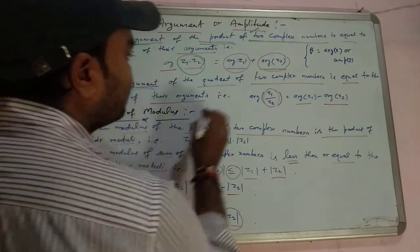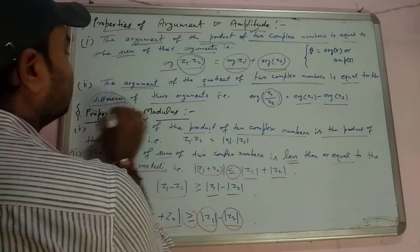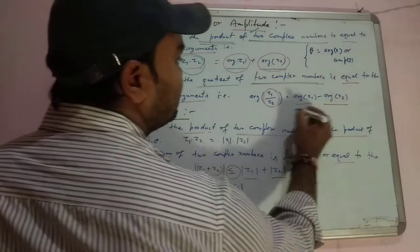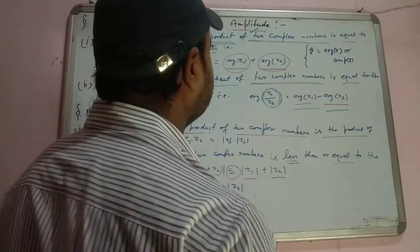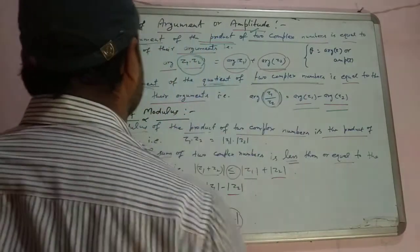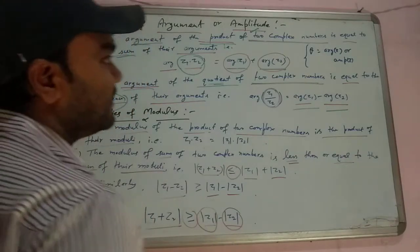Second, the argument of the quotient of two complex numbers is equal to the difference of their arguments. This is the quotient z1 by z2. These are the properties of argument or amplitude.